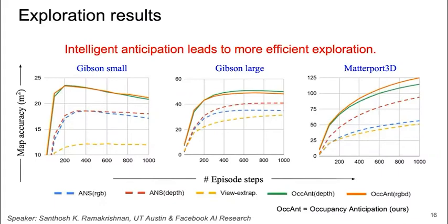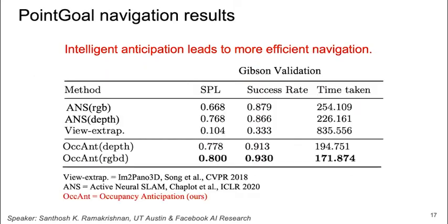Quantitatively, we can see the impact of these intelligent behaviors. Our models utilize anticipation to achieve high map accuracies with significantly improved efficiency. Next, we evaluate the impact of anticipation on point goal navigation. Our occupancy anticipation models achieve larger success rates with more efficient navigation when compared to strong baselines.